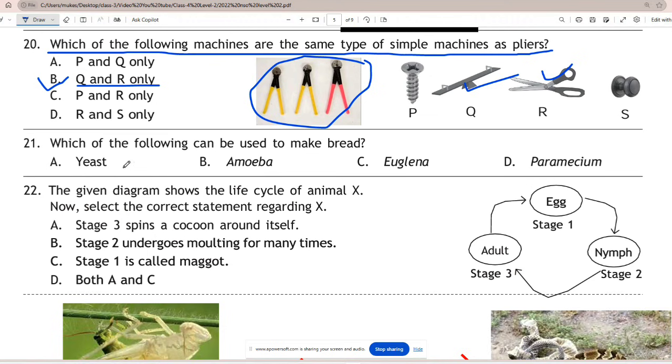Question 21: Which of the following can be used to make bread? Correct answer is option A - yeast. Yeast is used to make bread.